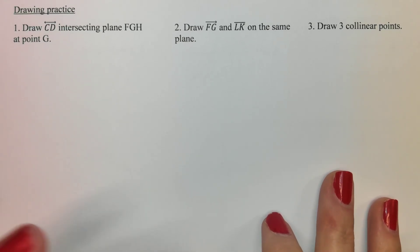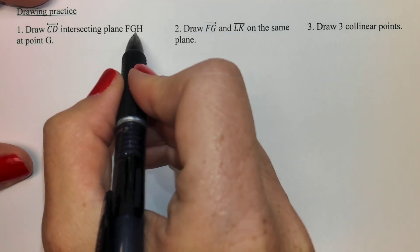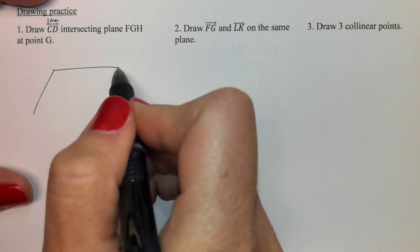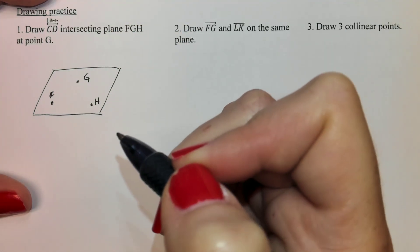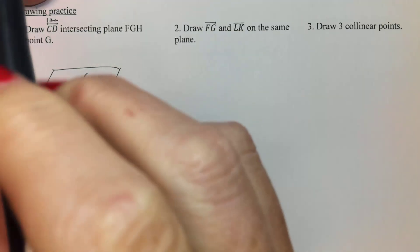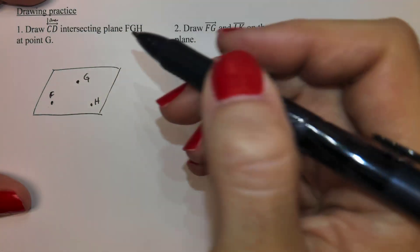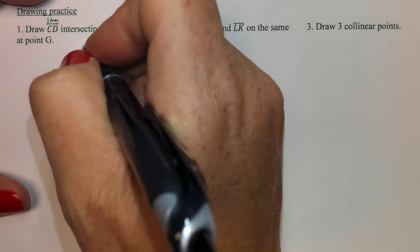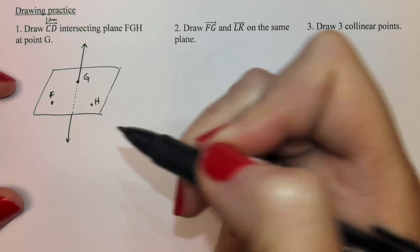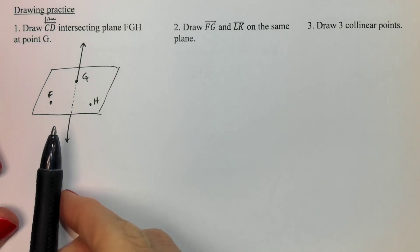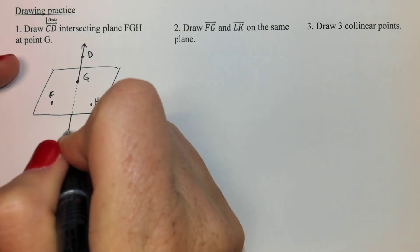A couple of drawing practices. First: can we draw line CD intersecting a plane? So I'll start with the plane — the bigger object — and FGH are just telling me some points. Then I draw the line so that it hits the plane at point G, which means it goes through it. I'll dot it like it's behind the paper below the plane, then let it keep going — kind of like a pencil coming up through the piece of paper, pushing right through at G. Then I put D on one end and C on the other.